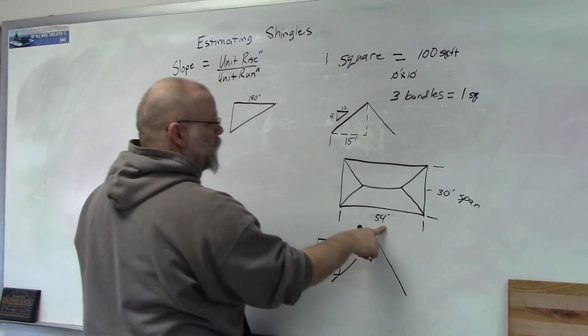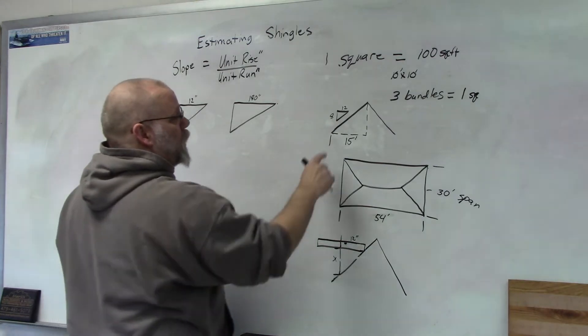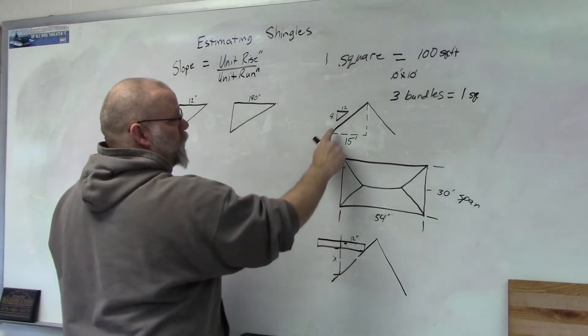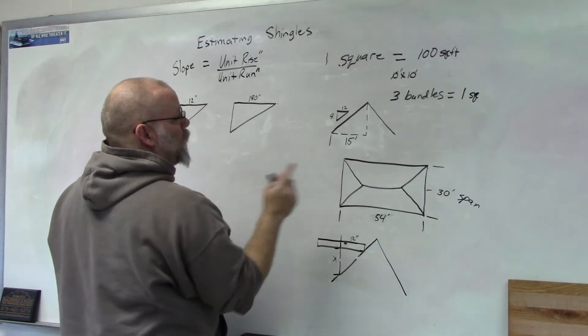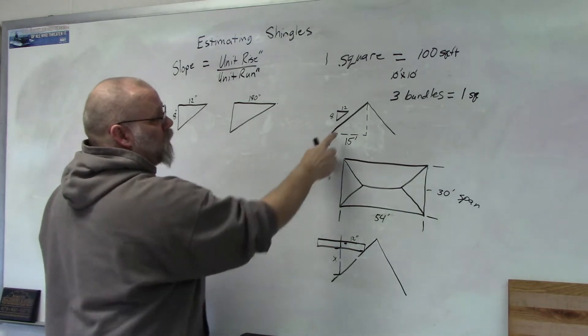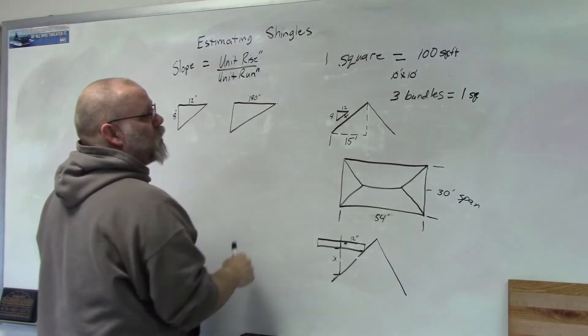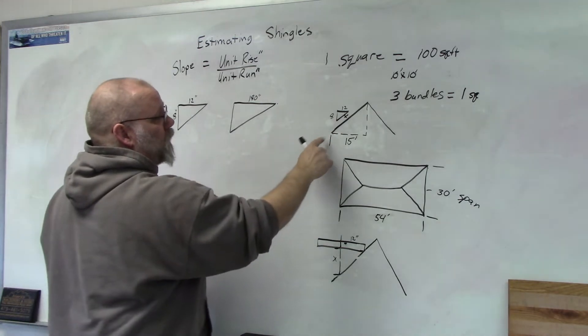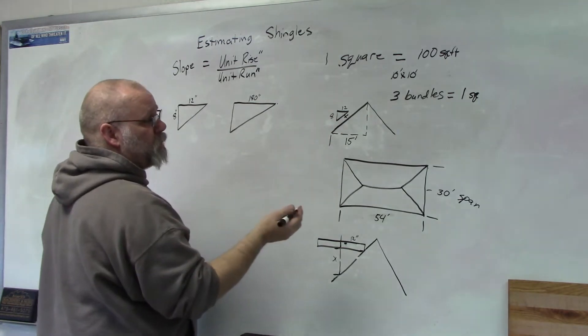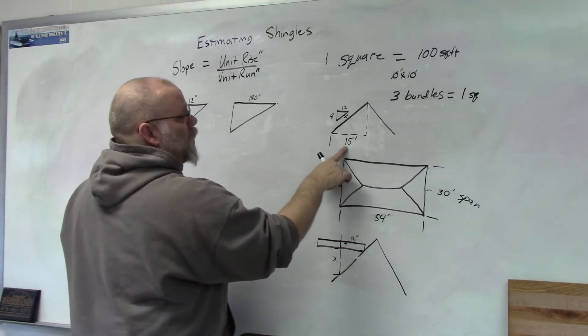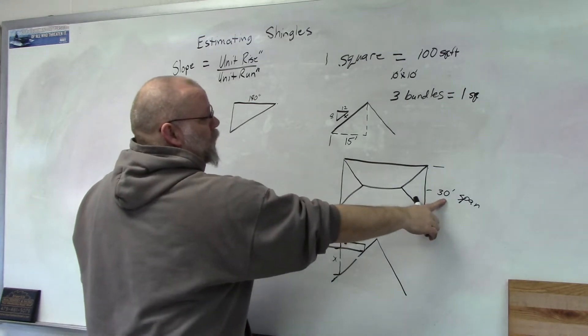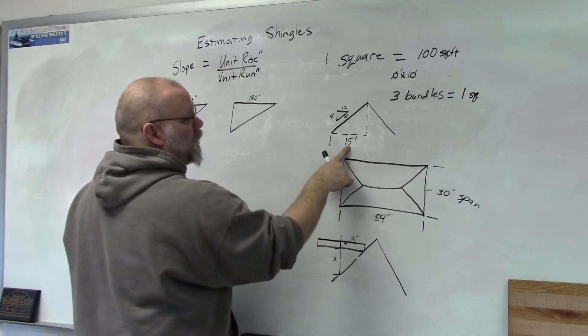In order to find the length of these slopes, we need to figure out the width of the building. Half of the span, which is 30 feet, is 15 feet, and that's called the total run.